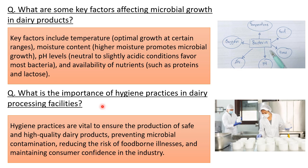What are some key factors affecting microbial growth in dairy products? The key factors are: first, temperature — optimal growth occurs at certain temperature ranges; second, moisture content — higher moisture promotes higher microbial growth; third, pH level — neutral to slightly acidic conditions favor most bacteria; and fourth, availability of nutrients such as proteins and sugars like lactose.